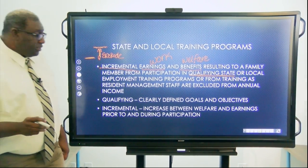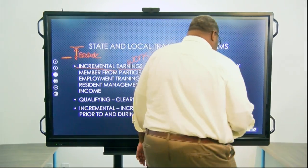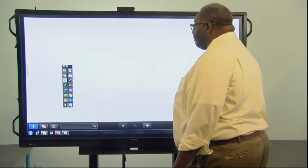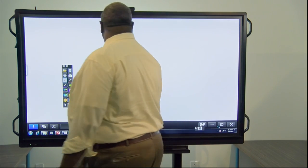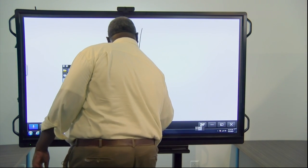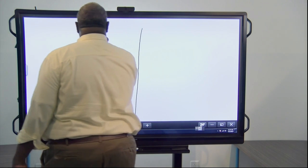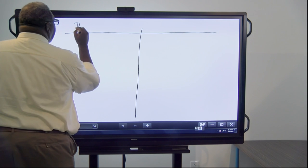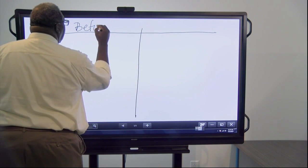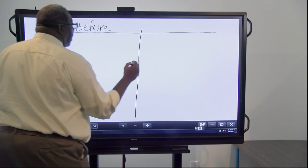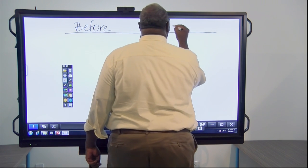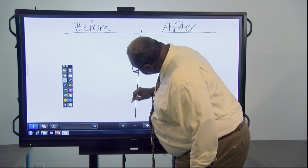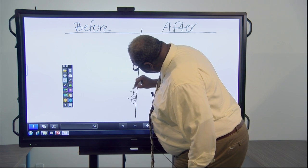So let me show you an example. This is a quick way to remember this. Before and after—this line here represents the date they started the training program.